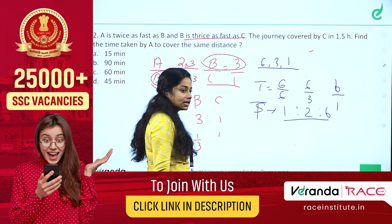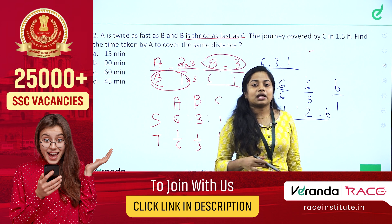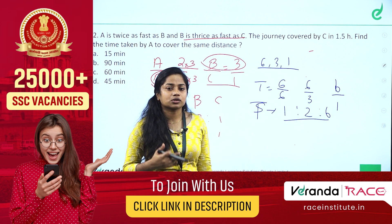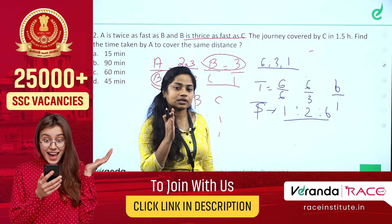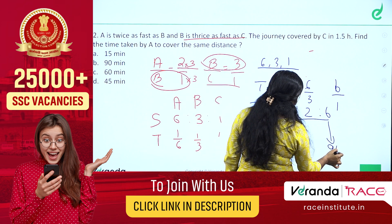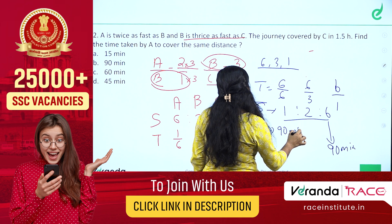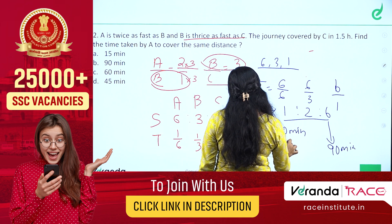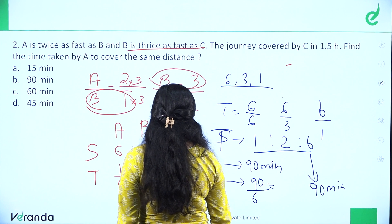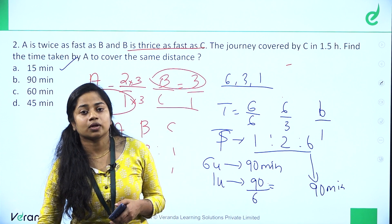Time ratio A : B : C = 1 : 2 : 6. C takes 1.5 hours, which equals 6 units. So 1 unit = 90/6 = 15 minutes. Therefore A takes 1 unit = 15 minutes. Option A is the correct answer.